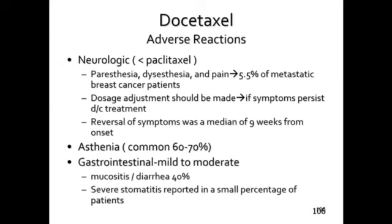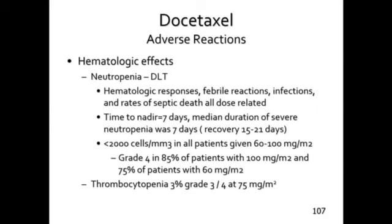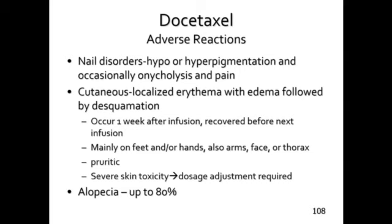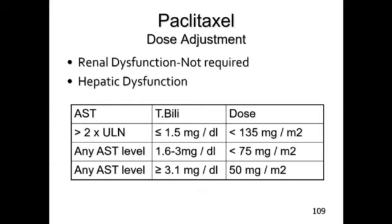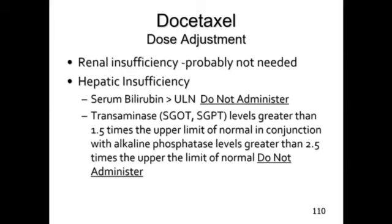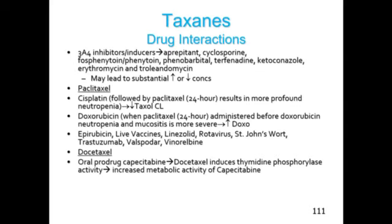Neurological toxicities are less than with paclitaxel. Asthenia is common at 60 to 70%. Neutropenia is the dose-limiting toxicity. Significant nail disorders with hypo- and hyperpigmentation can occur. You get localized erythema and edema. Alopecia is slightly lower than with paclitaxel. If bilirubin is greater than the upper limit of normal, you should not administer docetaxel.